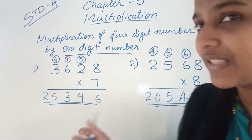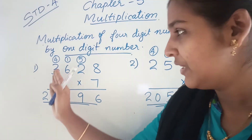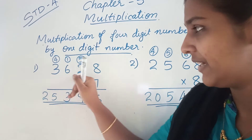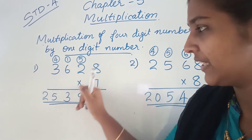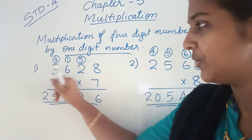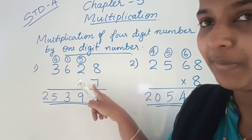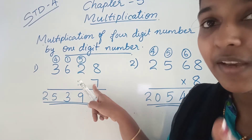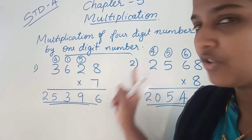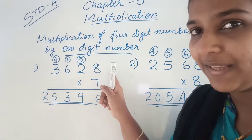Here we are going to discuss it with some examples. The first question is 3628 × 7. So it is a 4-digit number and we are multiplying it by a 1-digit number. As we know, we have to start from the ones place.